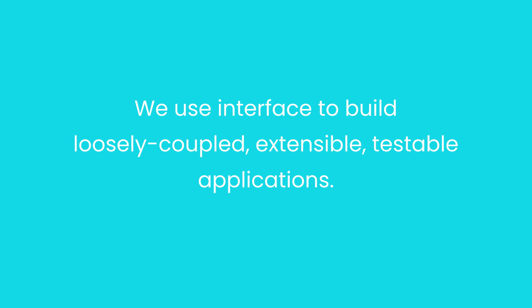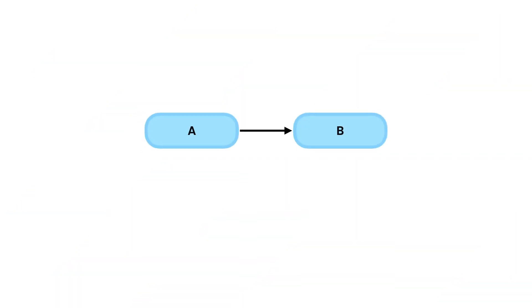What does this mean? Well, earlier in the course we talked about coupling, which is the level of dependency between two software entities like classes. So if class A uses class B, we say A is dependent or coupled to B. Now if we change B, we might have to change the code in A, and every other class that depends on A. Even if we don't have any breaking changes in the code, just because B is changed, it has to be recompiled, and that means every other class that depends on B and their dependencies should also be recompiled and redeployed.